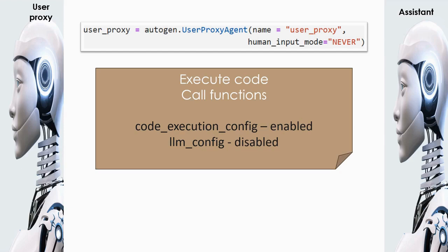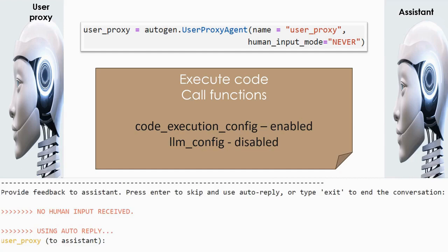If human_input_mode is equal to 'always', it is assumed that it expects the human to give a response. If a human response is expected, it will prompt: 'provide feedback to assistant, press enter to skip and use auto-reply, or type exit to end the conversation,' and you will get an input box. If you just press exit, it will automatically give an auto-reply.